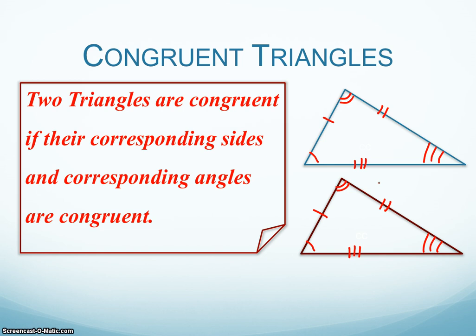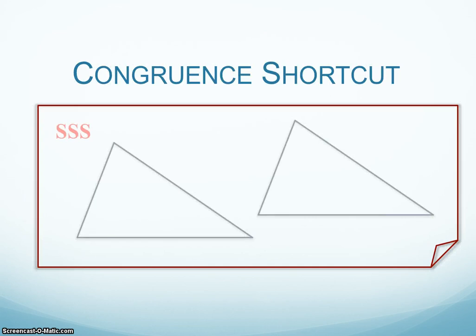So we know that two triangles — my blue one and my brown one — are congruent if we know that all the sides and all the angles are congruent. But there are actually some congruent shortcuts. So the first congruent shortcut is side-side-side, SSS.